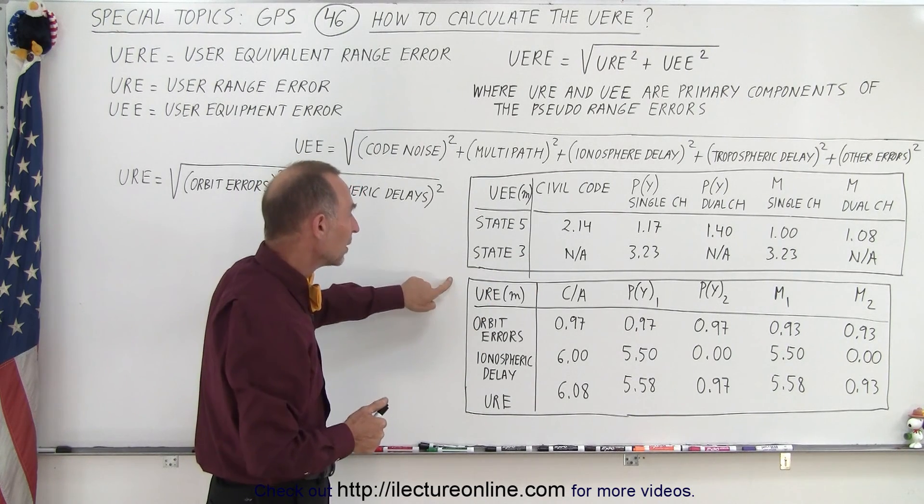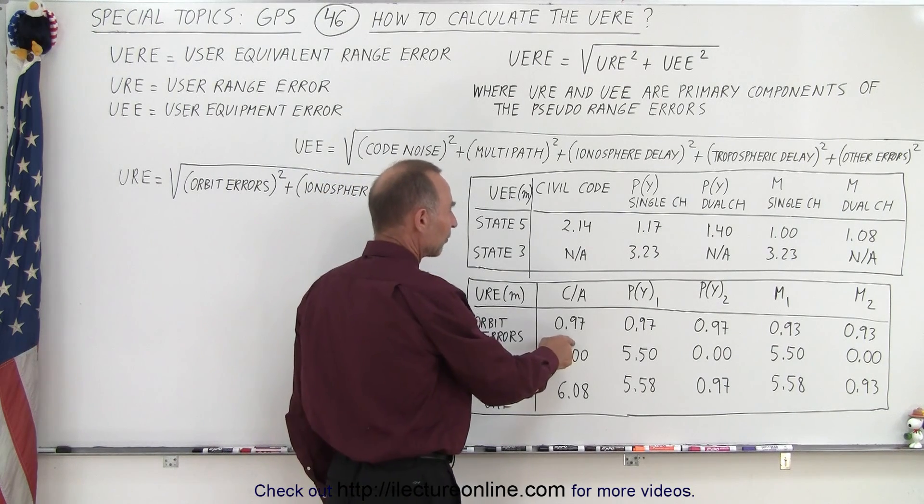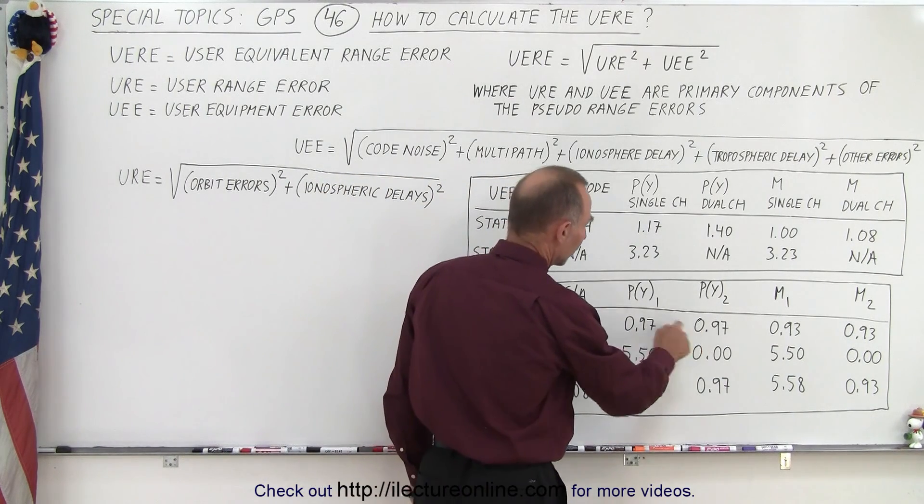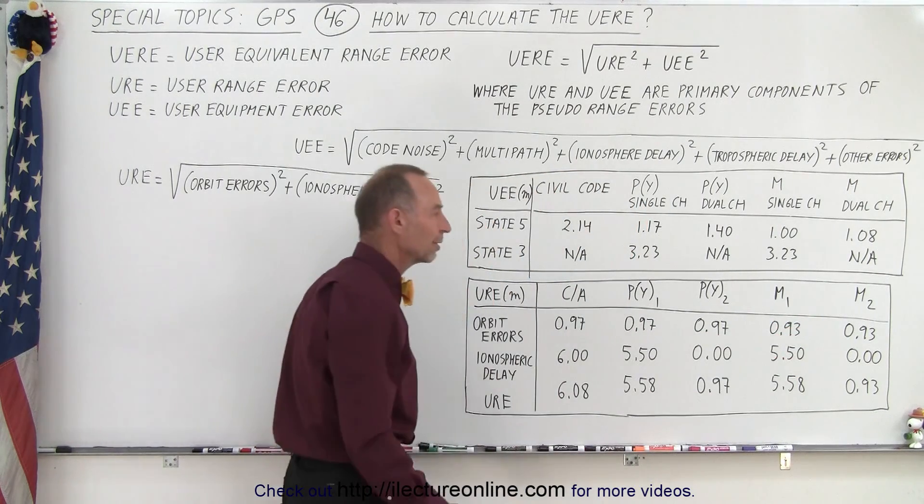So those are the values for the UEE that we then use in our calculations depending upon what mode we're in. For the URE, what we do here is we take the orbit errors, and you can see what they are. They're roughly about 0.97 for CA or Y code, and we have 0.93 or 0.93 for M code.